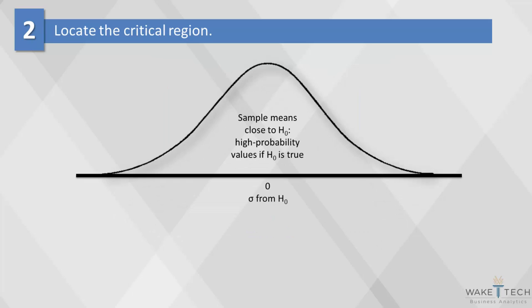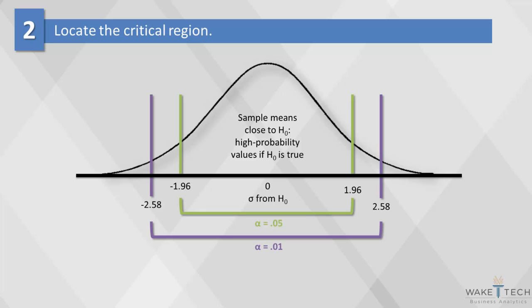These are the locations of the critical region boundaries for three different levels of significance: alpha equals .05, alpha equals .01, and alpha equals .001. Note that boundaries get wider as the critical value falls. In most cases, researchers choose an alpha of .05 or .01.